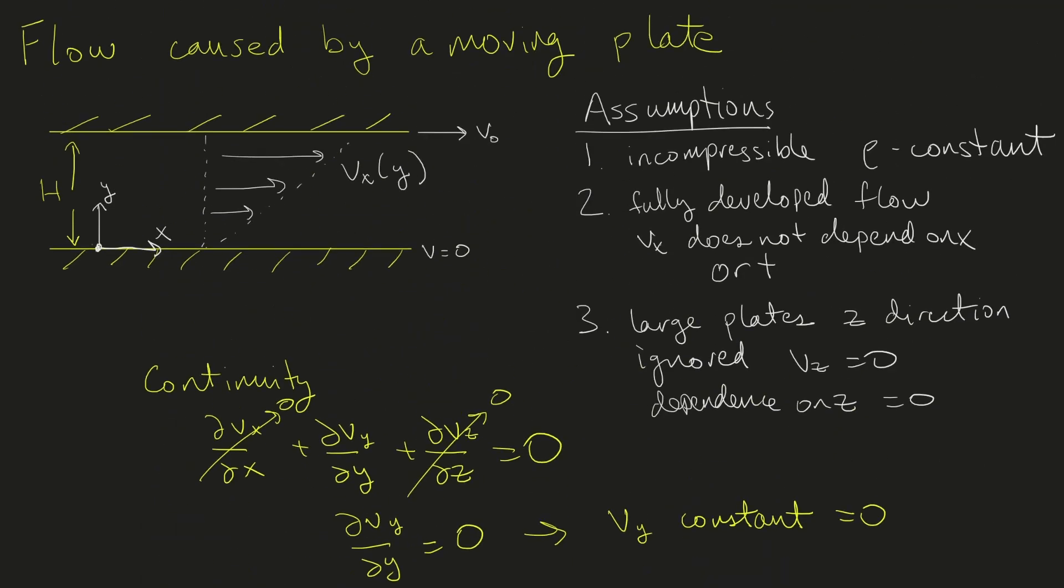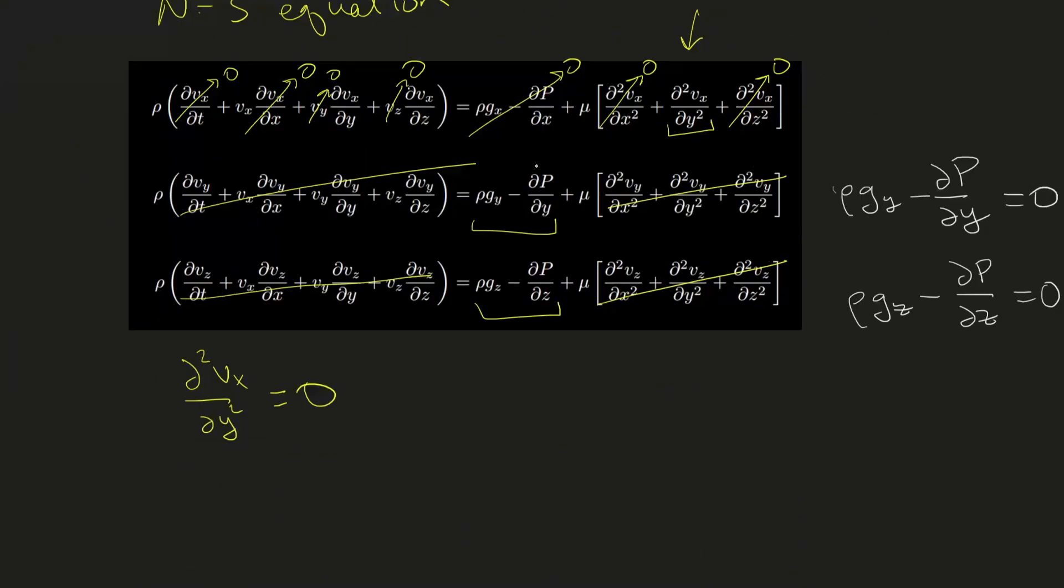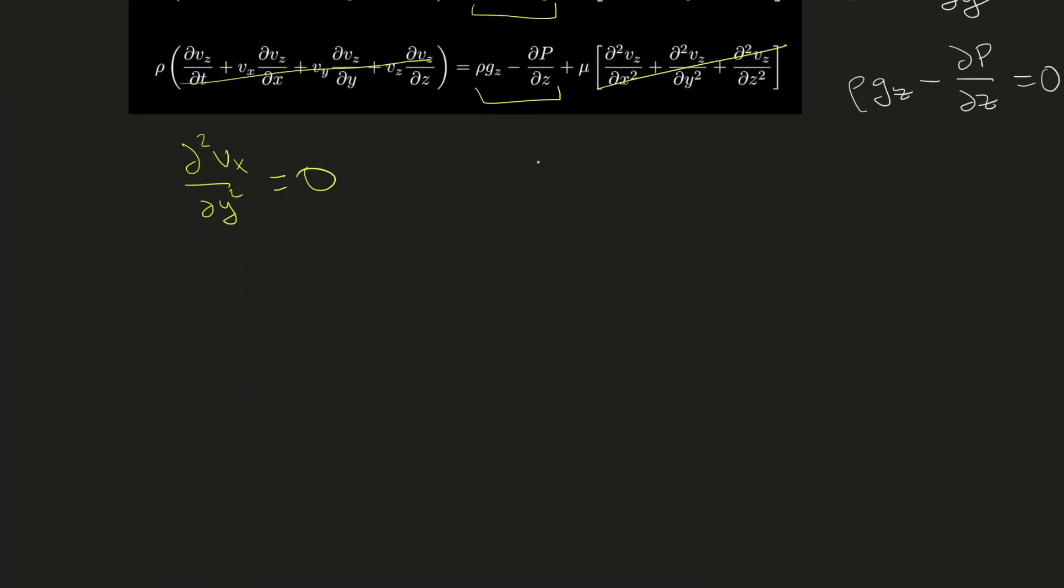To solve this equation, we need two boundary conditions. A common boundary condition is the no-slip condition, meaning the flow at the walls equals the velocity of the walls. So velocity at y = 0 equals zero, and velocity at y = h equals v₀.